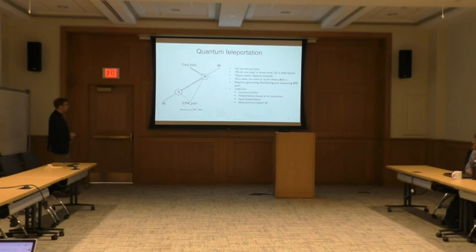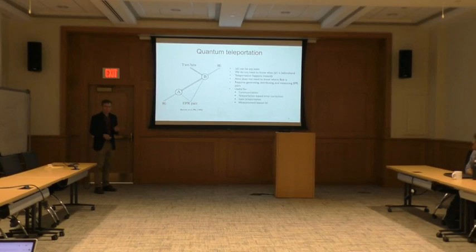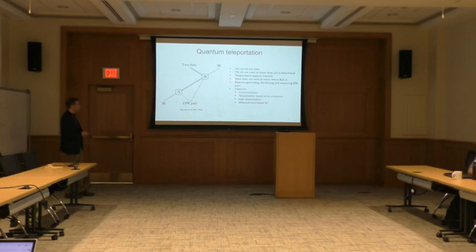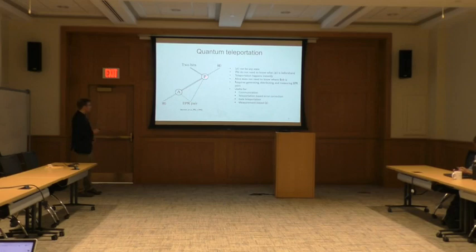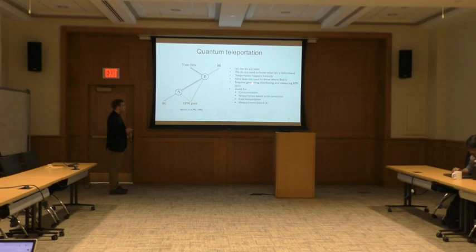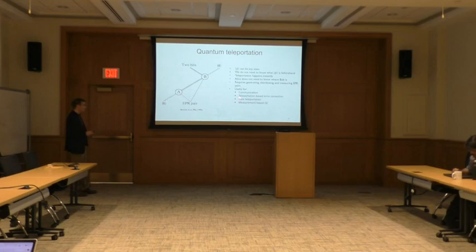Some important points: the state phi can be any state — we do not need to know what phi is beforehand, so teleportation works with unknown quantum states. When Alice measures her qubit together with phi, that instantly projects Bob's qubit onto phi. Alice does not need to know where Bob is, since this projection doesn't depend on Bob's location. Alice needs to send the result of her measurement to Bob, but she could broadcast this as classical information and Bob can pick it up wherever he is. This procedure requires making, distributing, and measuring entangled pairs of qubits. It's useful for communication, and there's a whole class of error correction protocols and quantum computing approaches based on teleportation.